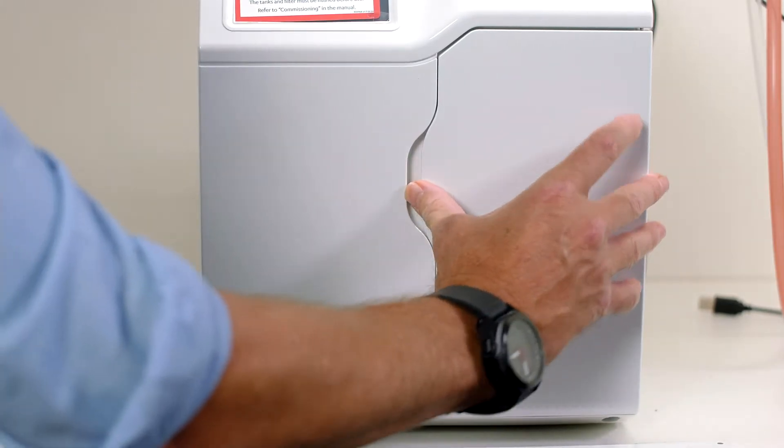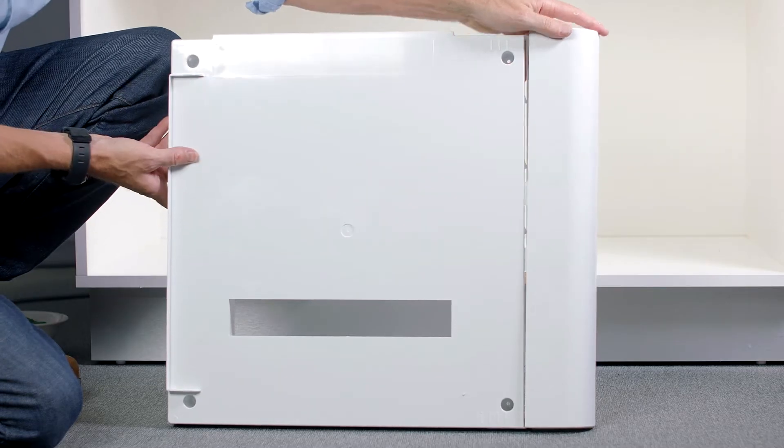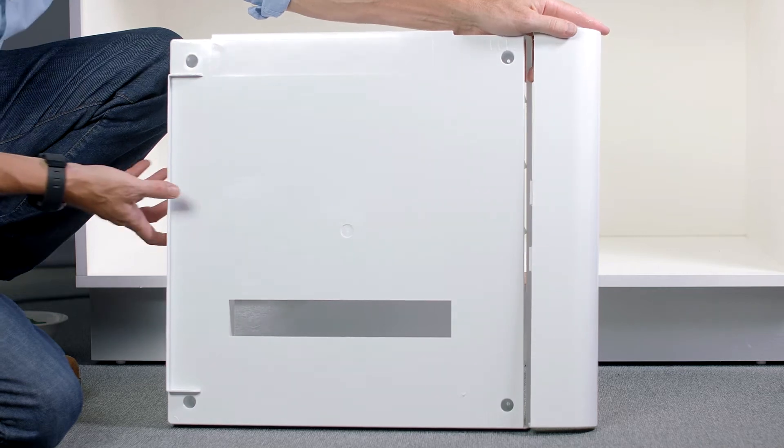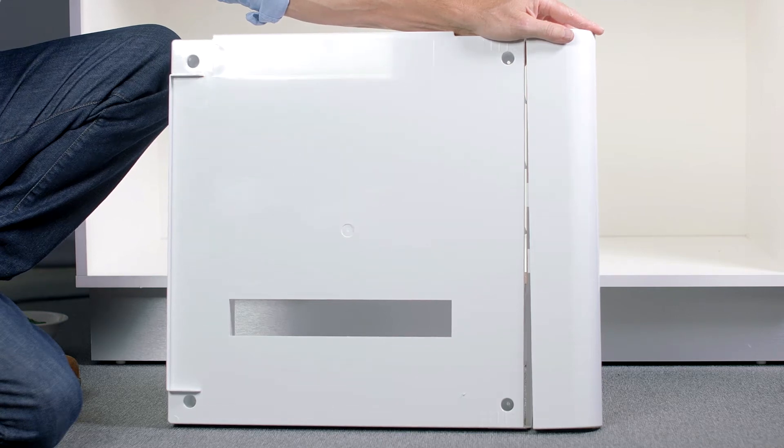The filter door houses the internal filter which needs to be fitted during installation. All chilled water commercial HydraTaps for 40, 60 and 100 people now come standard with a vent tray. This is to make correct installation of the HydraTap easier.